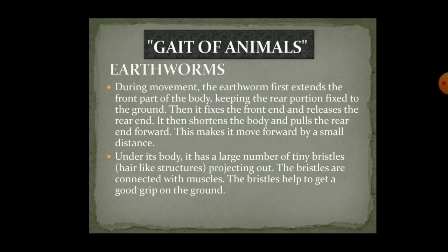Now we will study the movements made by animals and different creatures. First: earthworms. When earthworms move, they first extend the front part of their body while keeping the rear portion fixed to the ground. Then they fix the front end and release the back portion, shortening the body. Again they pull the front part forward and stick the back part. In this way the earthworm moves.